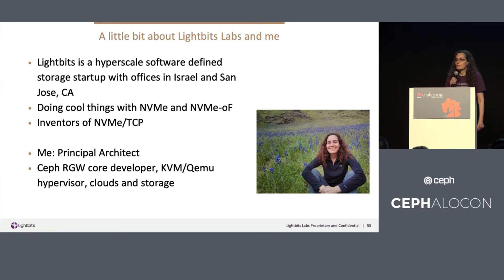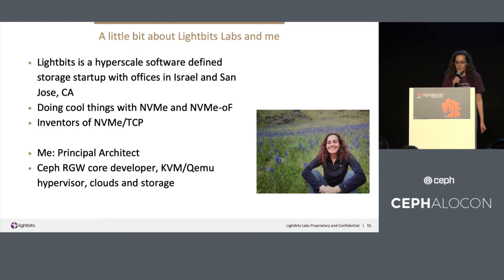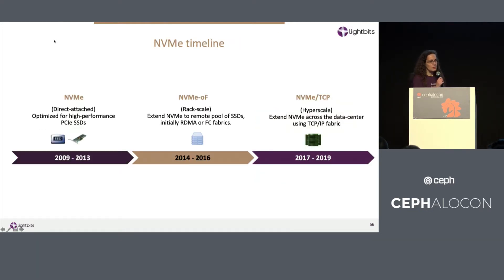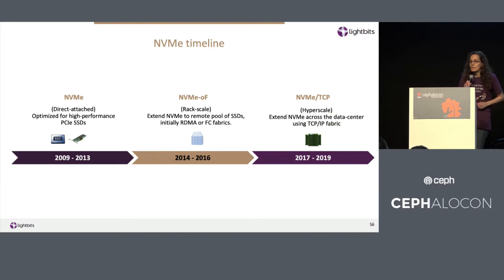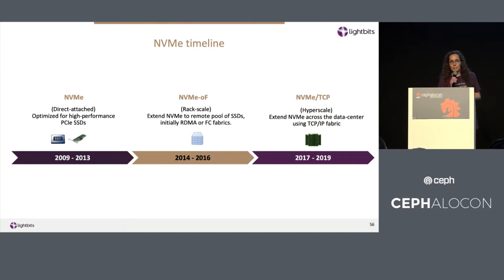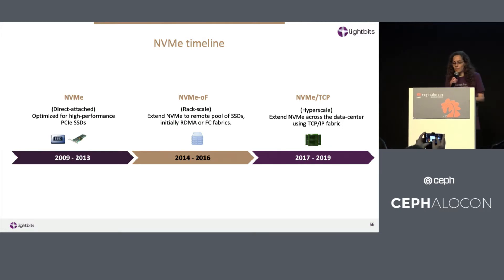We're doing very interesting things with NVMe, NVMe over fabric, and NVMe TCP. NVMe was introduced because it optimizes the high performance we can get from SSDs. The next step was NVMe over fabric, over RDMA, and then later fiber channel, and then we invented NVMe TCP.